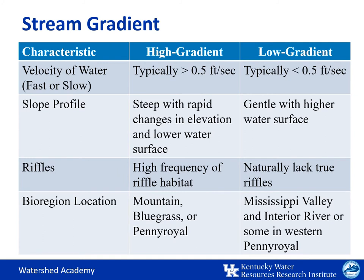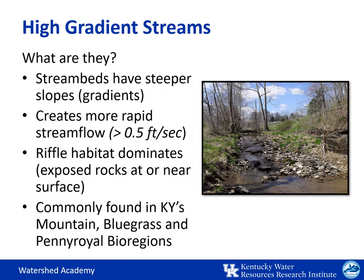When assessing aquatic habitat in Kentucky, we approach it differently depending on the stream's gradient or slope. In most areas of the state, streams have a higher gradient or steeper slope. But in a few areas, mainly in western Kentucky, we see streams with a much lower gradient or gentler slope due to the flatter topography of the region. Let's take a look at the differences between these two types of streams.